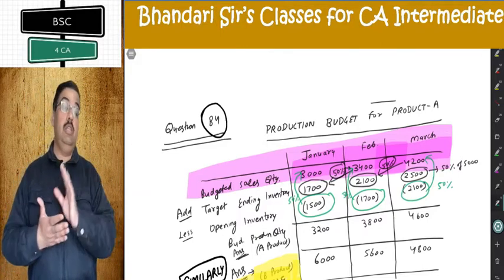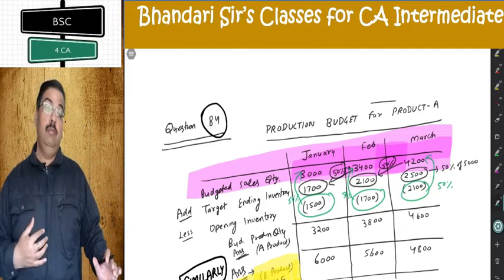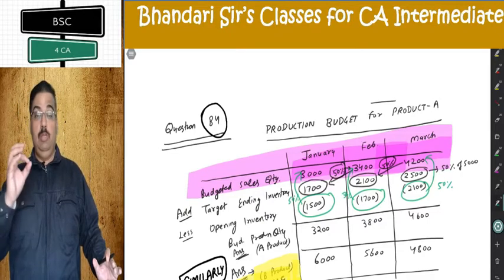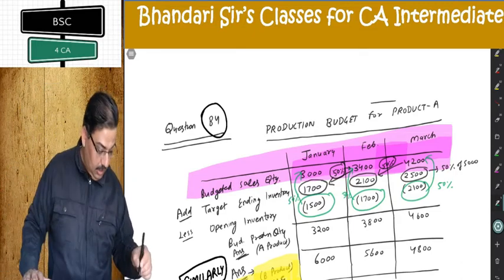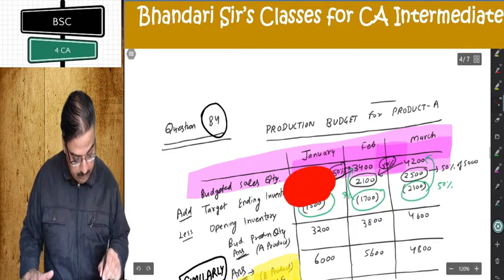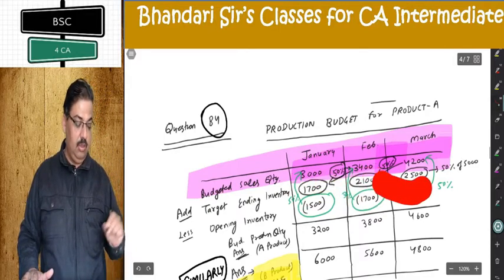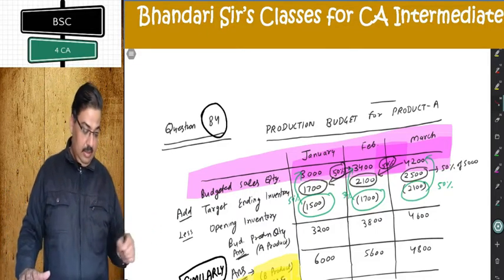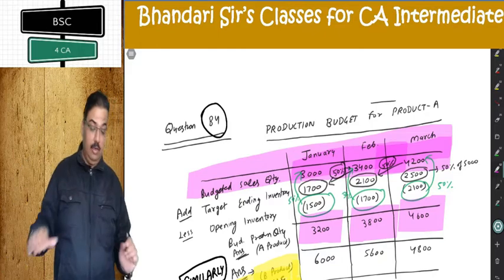Next month sale 50% is closing stock; same month sale 50% is opening stock. So 1st February stock will be 31st January stock. This 1,700 is the same as that 1,700; this 2,100 is the same as that 2,100. From there, budgeted production quantities are: 3,200, 3,800, and 4,600.